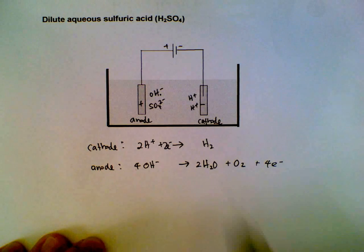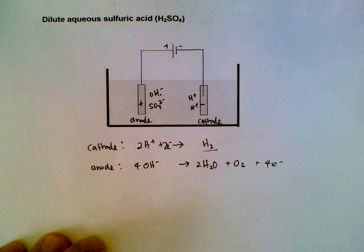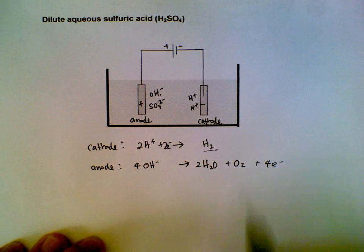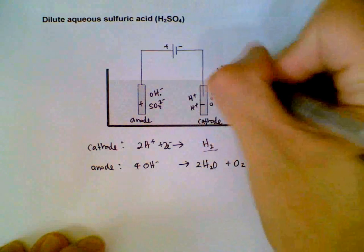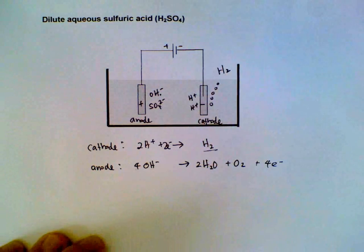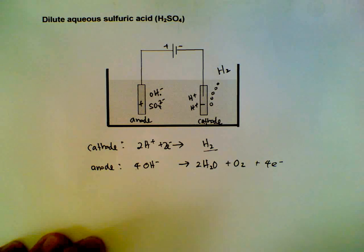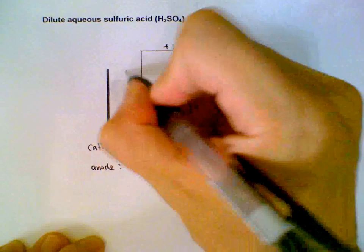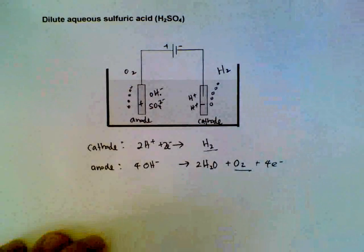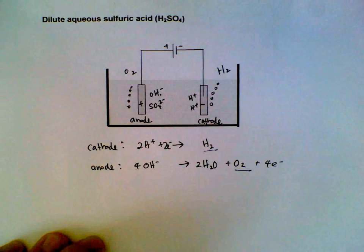So at the cathode we have hydrogen gas forming. Observations will be effervescence, and a lighted splint extinguished with a pop sound. At the anode, we will have effervescence due to oxygen gas. If we were to test for it, it will relight the glowing splint.